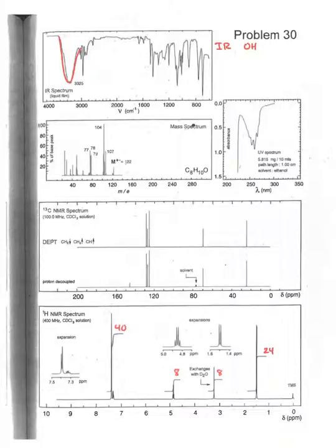The other thing you want to look for in the IR is between the 1600 and 1800 region if there's any sort of peak. There's nothing really here, so that tells us there is no carbonyl.